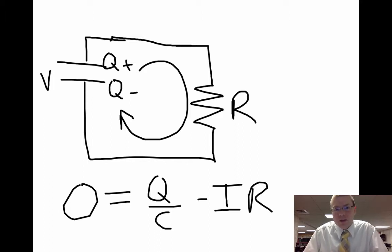And that's where we're going to start with this. Why is it a positive Q over C? Because we're going across the capacitor from the negative terminal to the positive terminal, like a battery. So we're going to gain volts as we go across the capacitor, and we're going to lose voltage when we go across the resistor.